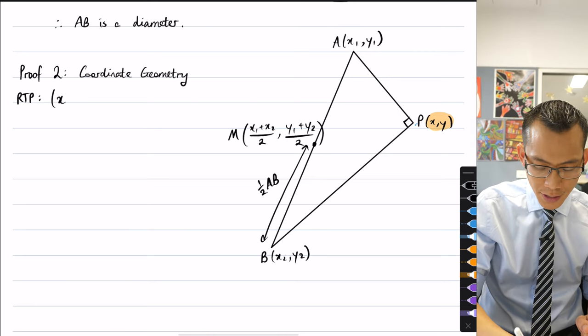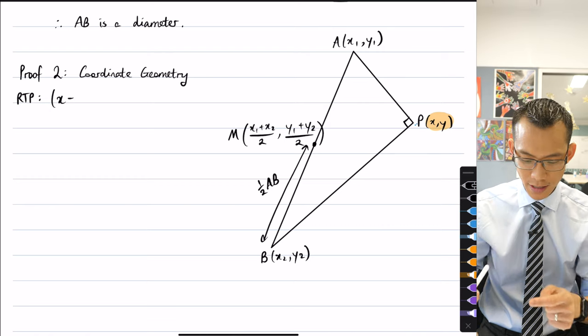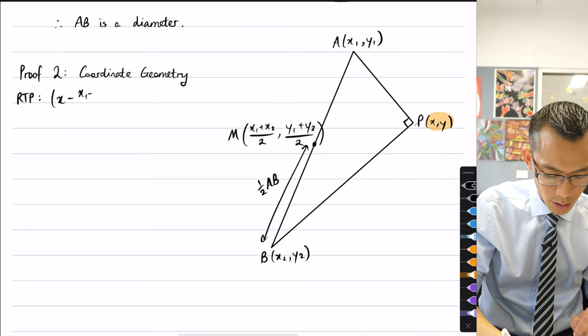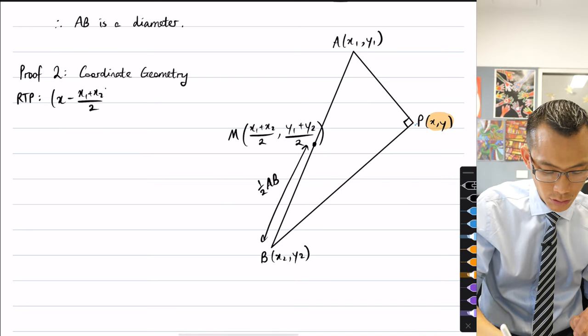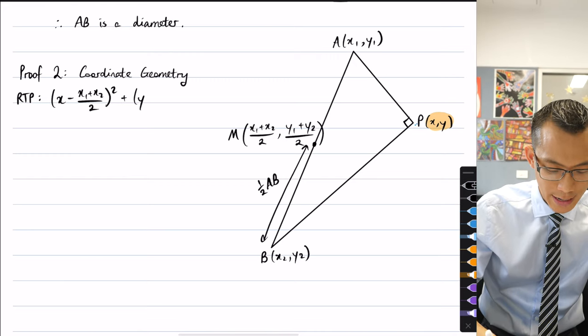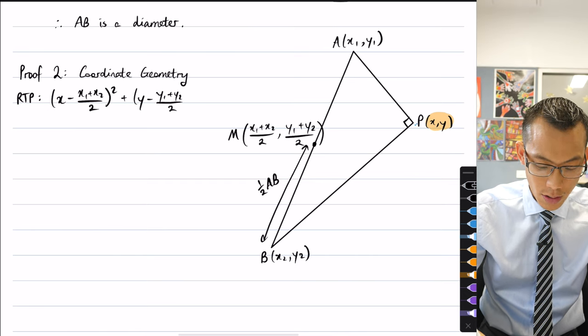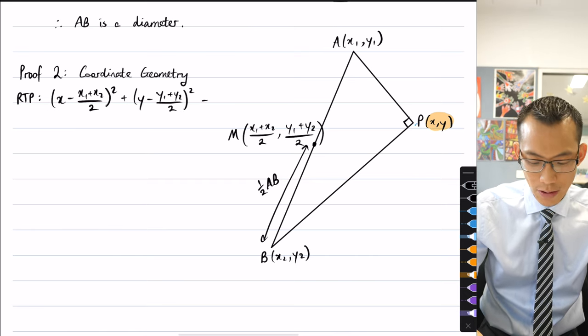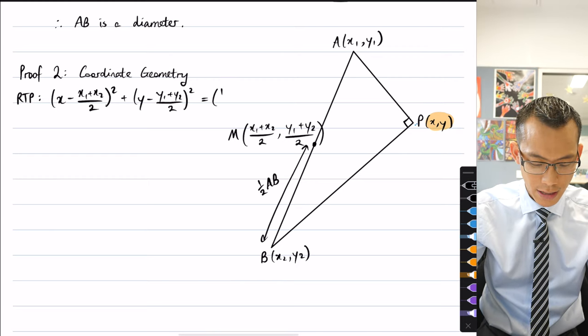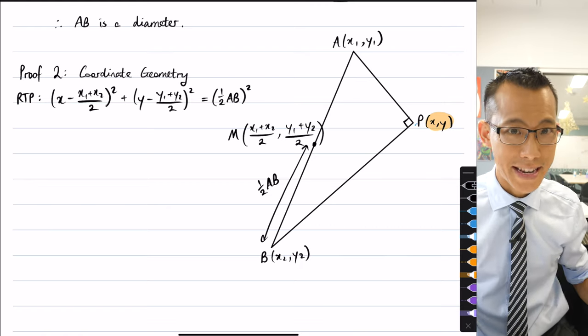So that's going to be x minus (x1 plus x2 over 2) all squared. I repeat the same thing for y, so it's y take away the y coordinate of the center, (y1 plus y2 over 2) all squared, and what that's equal to is the radius squared. So I said that the radius would be half of AB all squared. This is my destination.